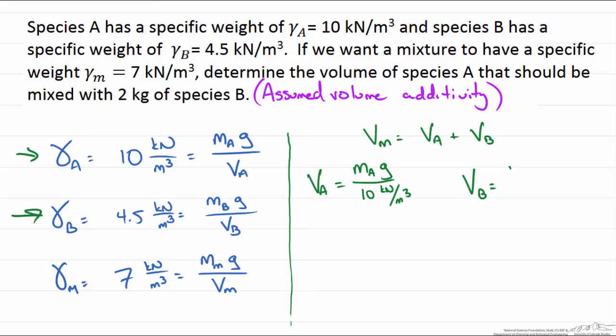Based on the problem statement we are asked to determine the volume of species A that should be mixed with 2 kg of species B. So we know this value, so we can plug that in.